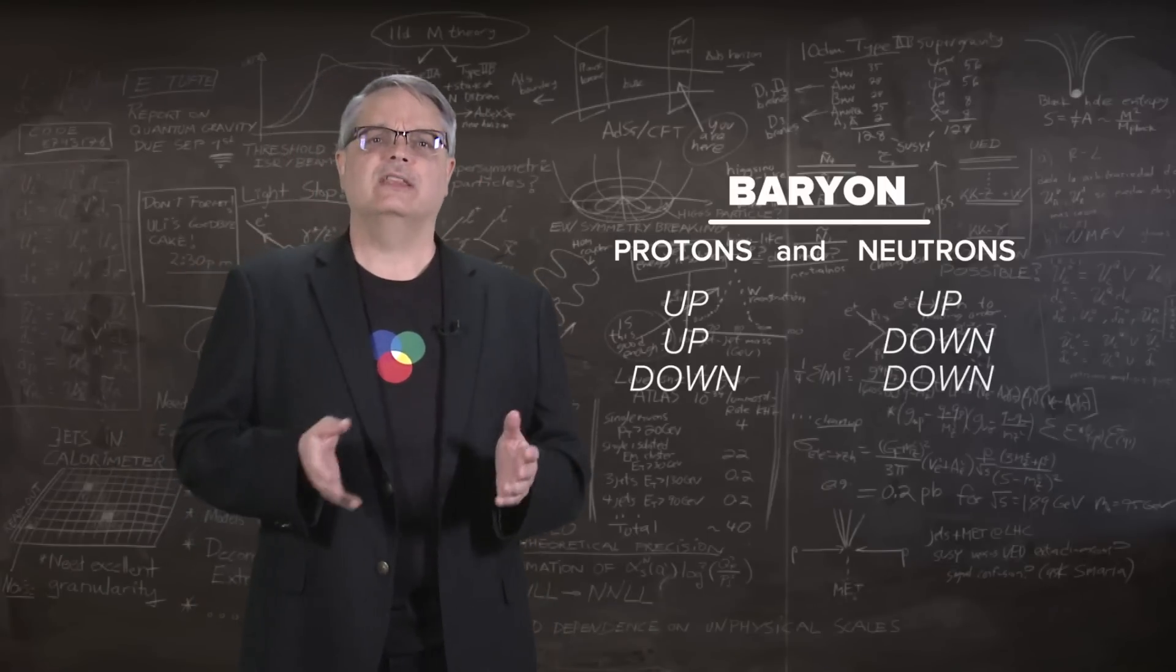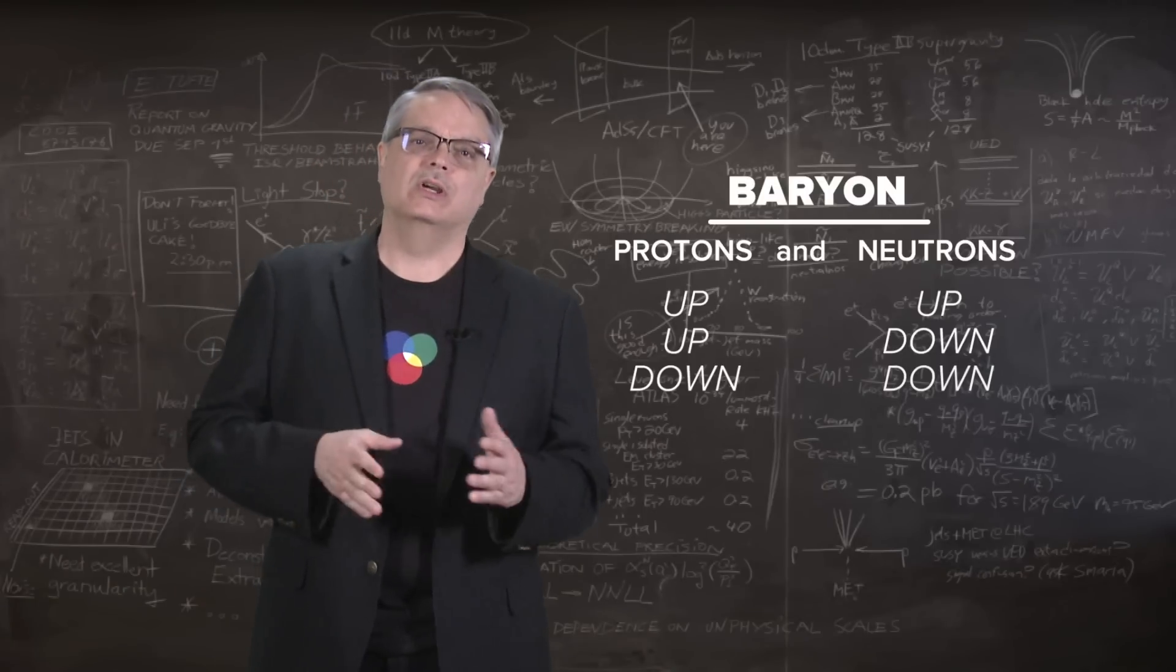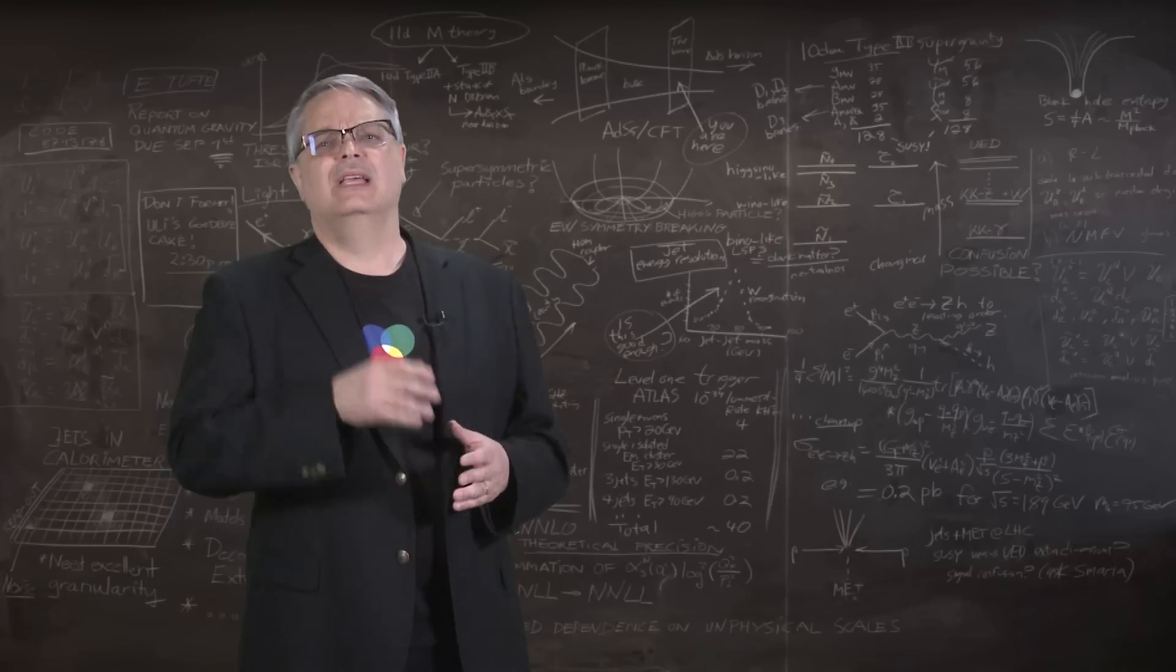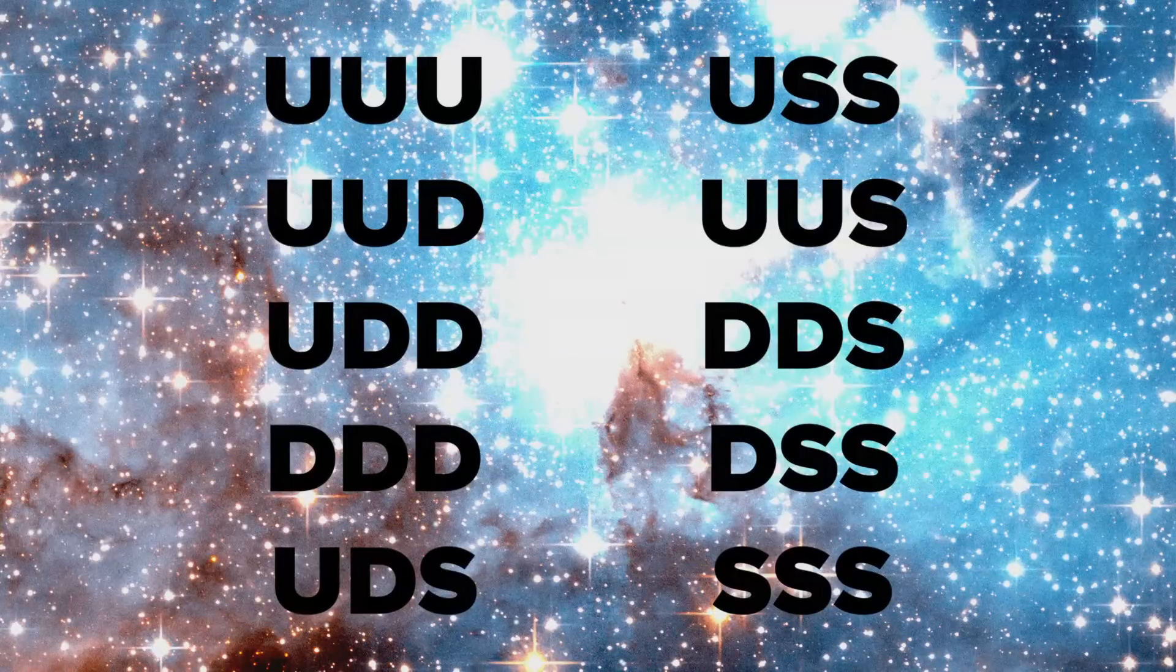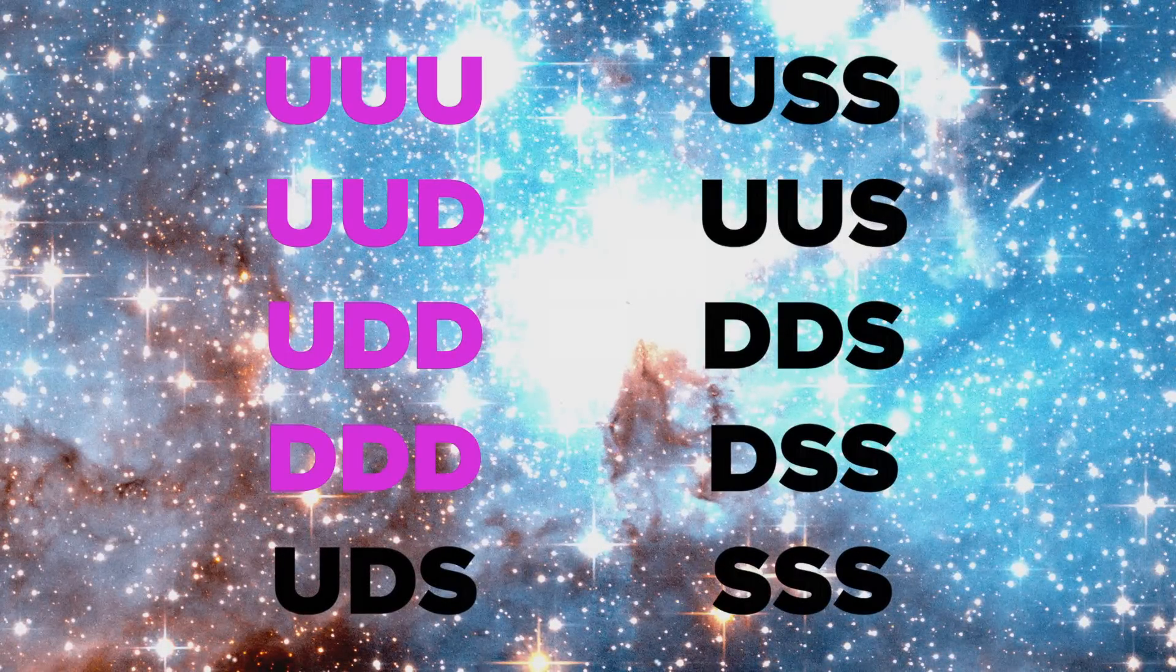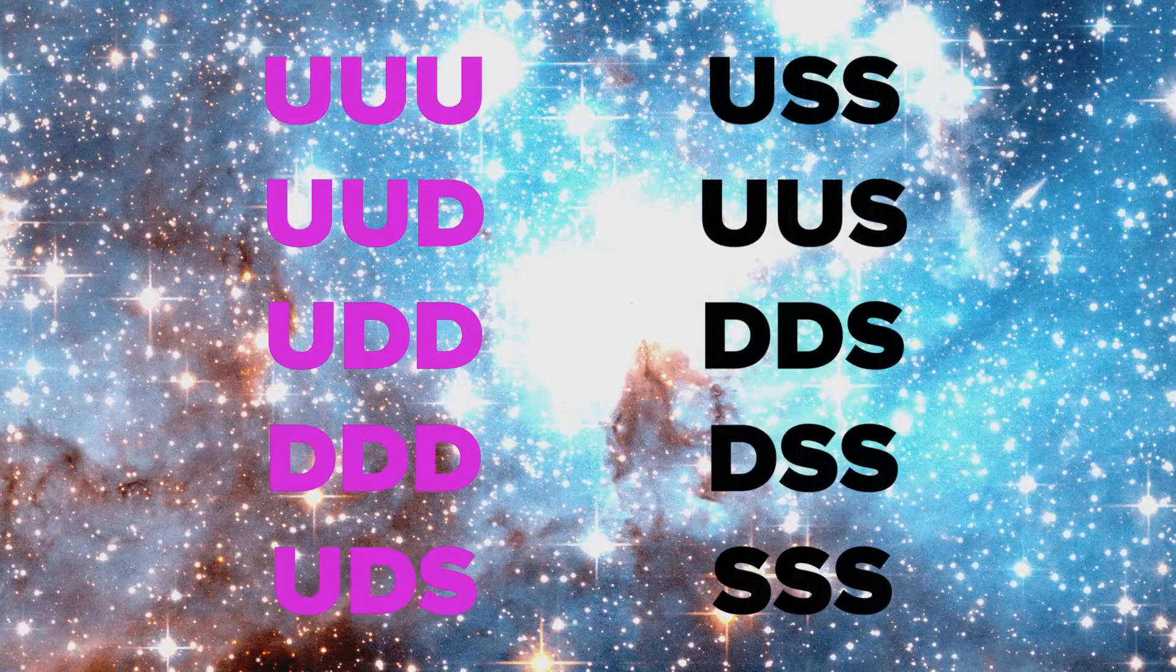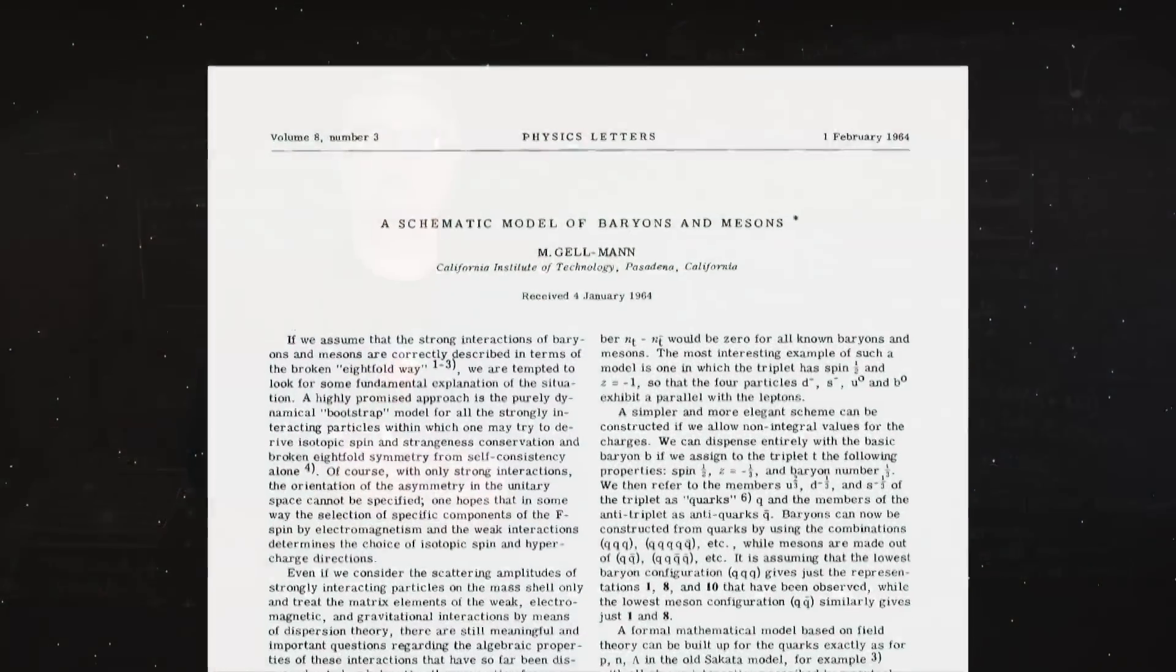But beyond the fact that baryons contain exactly three quarks, there were no rules on which quarks could exist in a baryon. So that means that all other configurations should exist. They're listed here. Up-up-up, up-up-down, up-down-down, and down-down-down, for example. And then there are the ones containing strange quarks, like up-down-strange, etc. In fact, when the quark model was proposed...